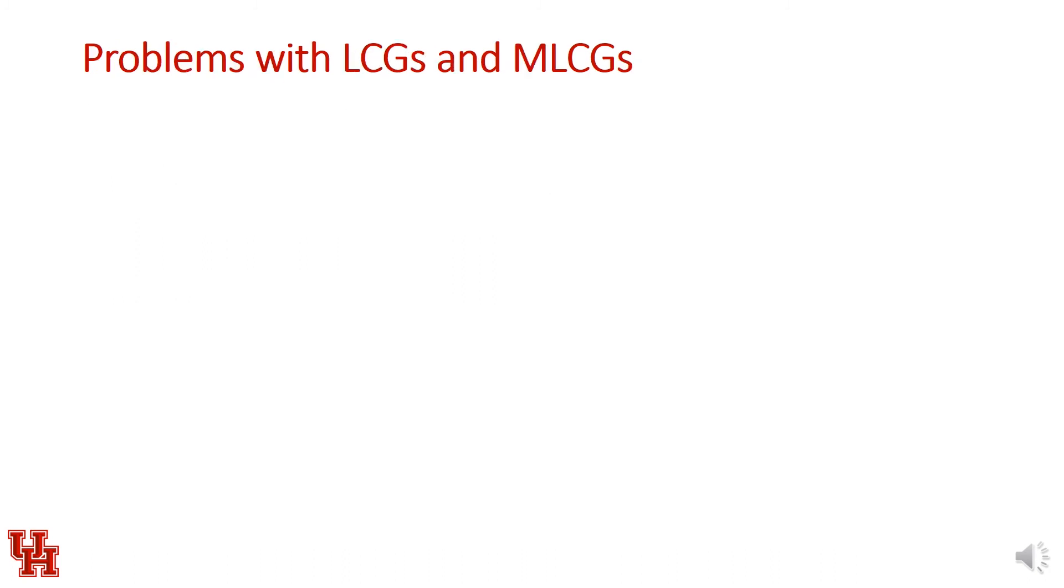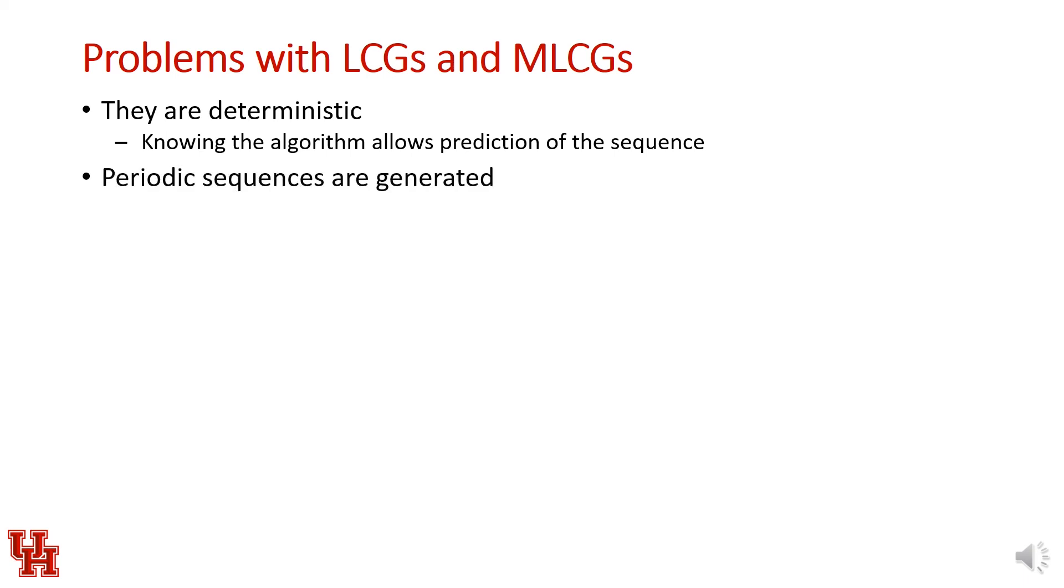There are a few problems that we have to be aware of for LCGs and MLCGs. The first and most obvious is that they're deterministic. If you know the algorithm, this allows you to predict the sequence of random numbers that's generated. All you have to know is the algorithm and any previous random number, and you can then predict that sequence. Periodic sequences are always generated. But also, when you're using a modulus of 2^n, lower order bits actually have a lower period. You'll see the lower order bits repeat more often. Some of the least significant bits have periods of 2, 4, or 8.